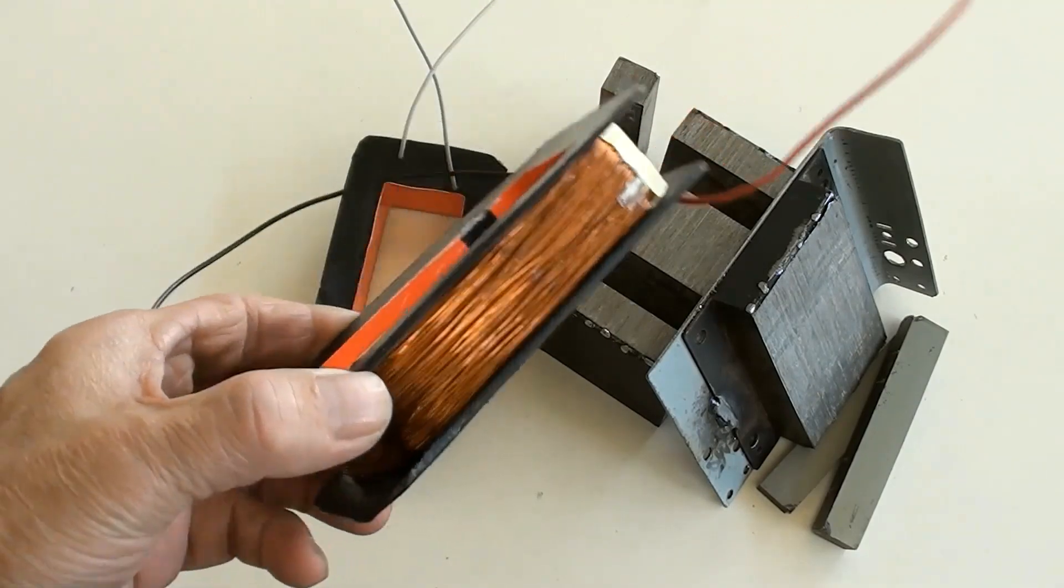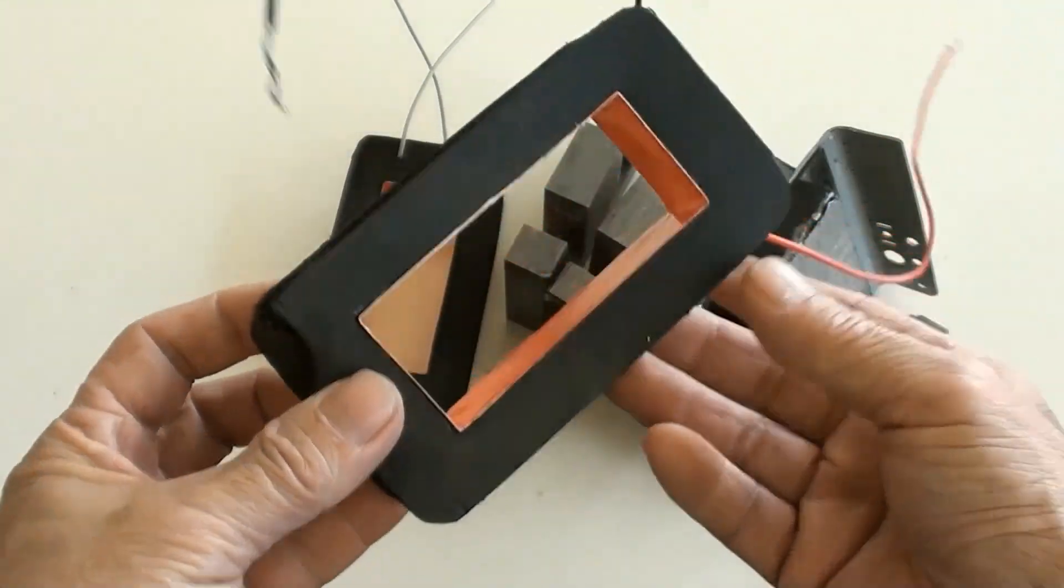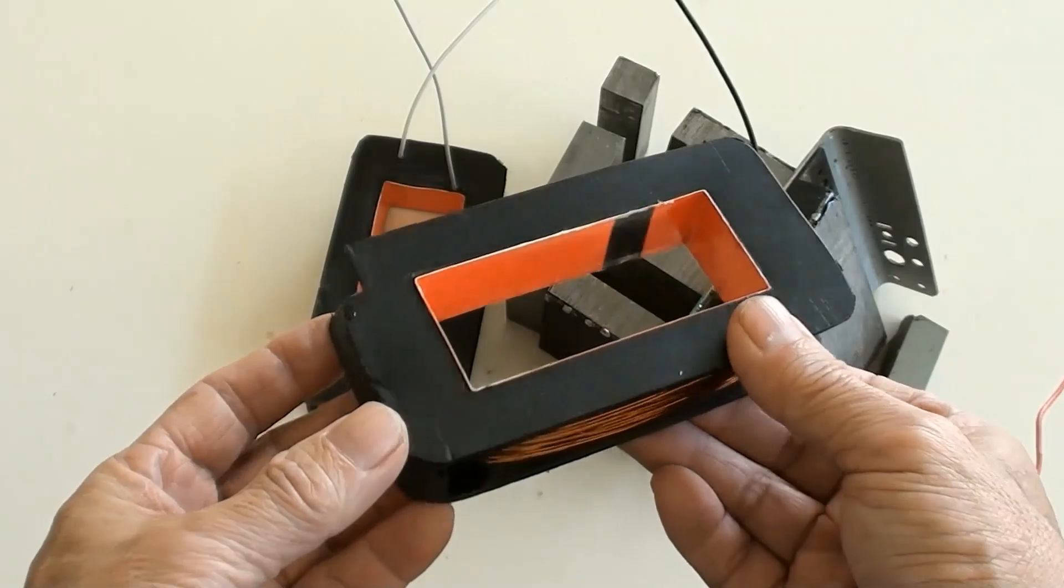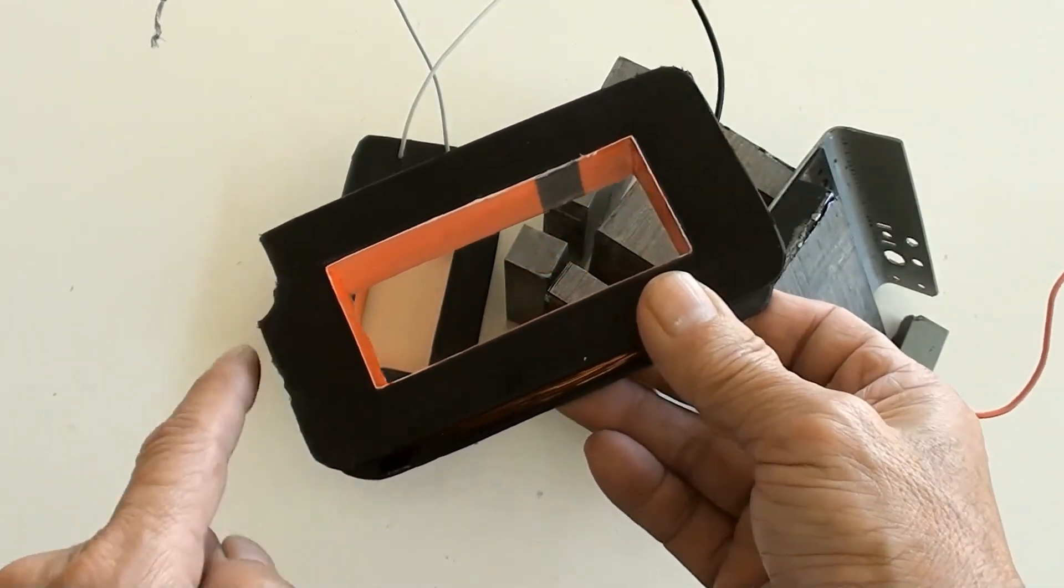This is the DIY made primary coil of 380 turns for 240 volt input, so it's a little bit more.